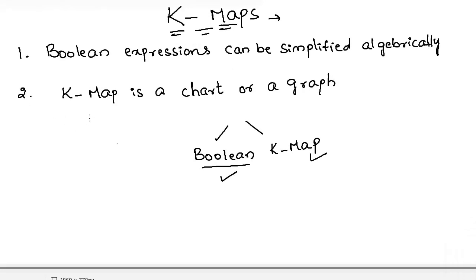Today's topic is K-maps. K-maps are used to minimize the number of literals in a boolean expression. We can minimize literals in two ways. The first method is boolean algebra, where we minimize the number of variables in a boolean expression. The drawback of boolean algebra is that we cannot minimize in a systematic method and can never confirm that the minimal expression obtained is truly minimal.